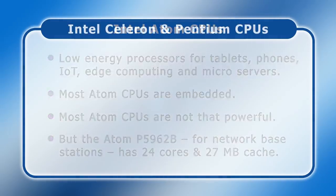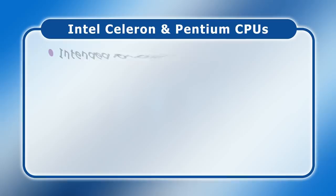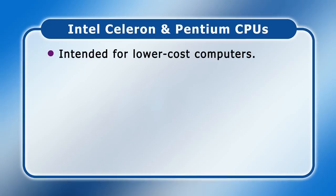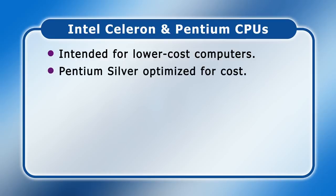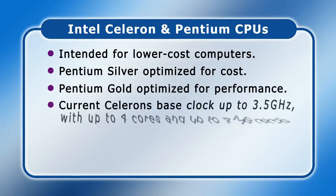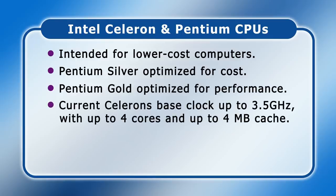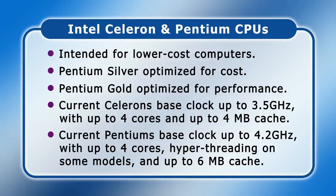Next, we have Intel's Celeron and Pentium processor families, which are intended for use in lower-cost desktop and laptop computers. Recent Pentium models are either silver, which are optimised for cost, or gold, which are optimised for performance. Current Celeron processors have base clock speeds of up to 3.5 gigahertz, up to 4 cores, no hyper-threading, and no more than 4 megabytes of cache. Meanwhile, current Pentium processors have base clock speeds up to 4.2 gigahertz, up to 4 cores, hyper-threading on some models, and a cache of up to 6 megabytes.